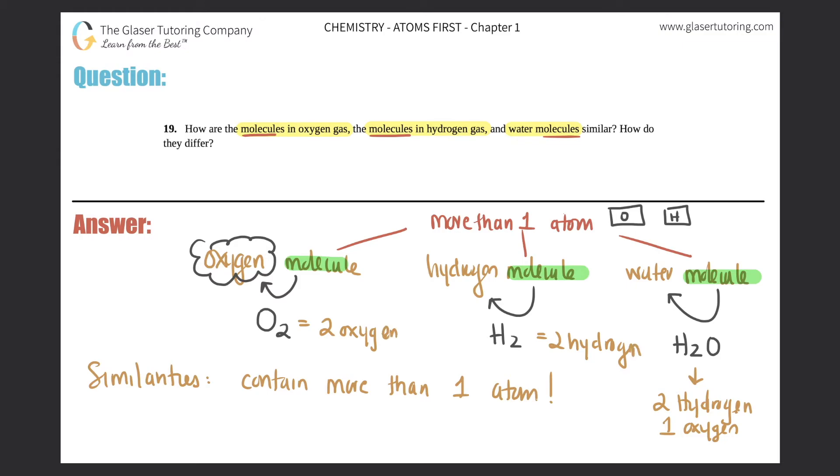But now look at them: O2 versus H2 versus H2O. What are the differences? They wanted to know how each one of these are different. So you can say that O2 and H2 contain multiple atoms of same atom. So here it's two oxygens but it's only oxygen. In H2 there's two hydrogens but it's only hydrogen. With H2O, it's multiple atoms of different elements.